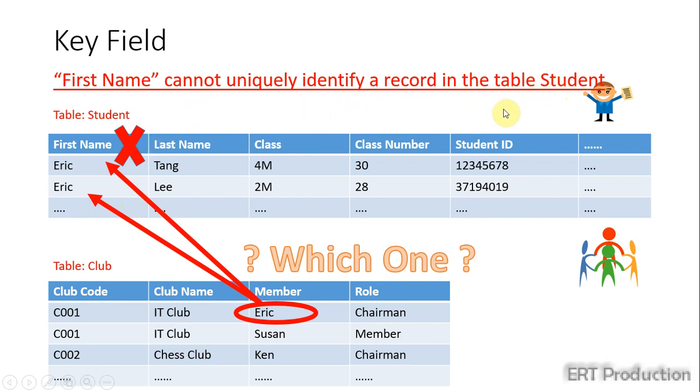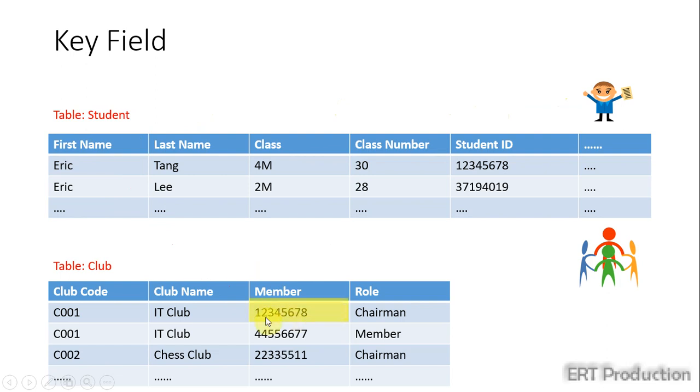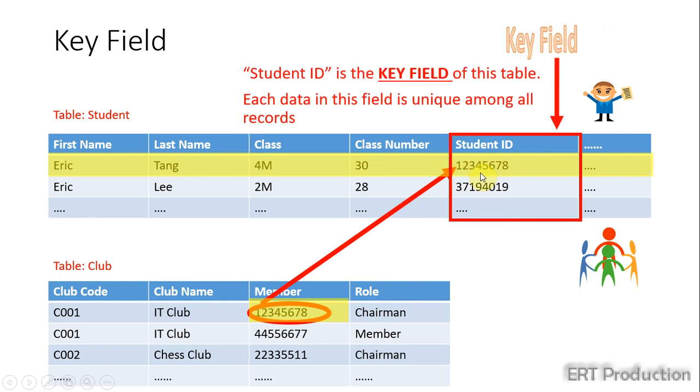Therefore, we can't use the first name field for referring records in another table. Instead, we should use the student ID field for referring records in another table. Since the data in the student ID field will not repeat in the student table.